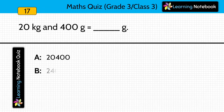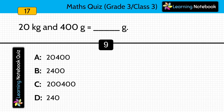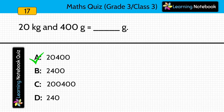Question sixteen: 20 kilograms and 400 grams equals how many grams? Answer is 20,400. Because 1 kilogram equals 1,000 grams, so 20 kilograms equals 20,000 grams, and then adding 400 grams gives 20,400 grams.